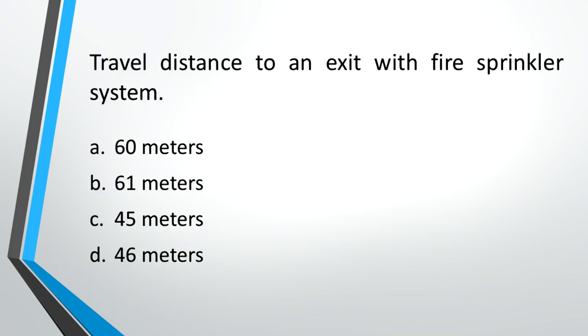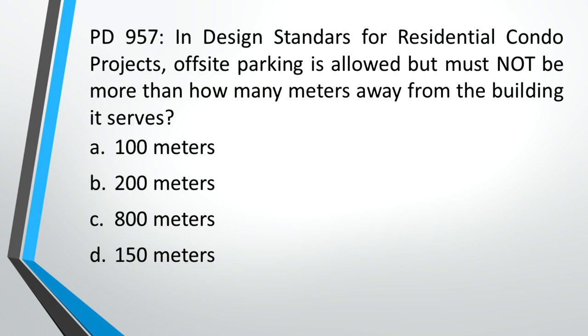Travel distance to an exit with fire sprinkler system. A: 60 meters, B: 61 meters, C: 45 meters, D: 46 meters. Answer: B, 61 meters.